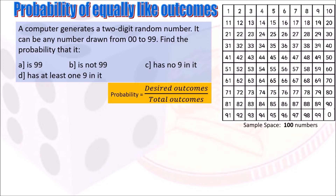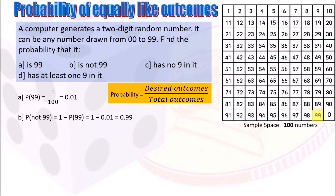That total of 100 becomes our denominator in our probabilities. The probability that the number is 99: looking at the number square there is only one 99, so that is 1 out of 100, or 0.01. For the probability that it is not 99: if there is one 99, the remaining 99 numbers are not 99. We can use the complement: P(not 99) = 1 − P(99) = 1 − 0.01 = 0.99, or 99 out of 100.